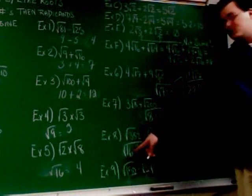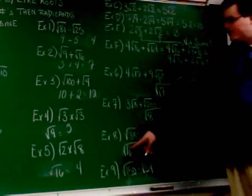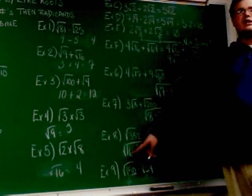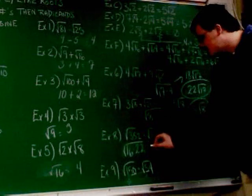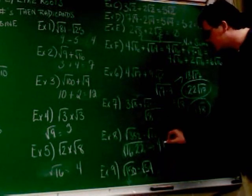You should ideally be looking for a number that's a perfect square here. That's the way it's going to work. So, root 16. What's the square root of 16? 4. So, that's the same as 4 root 22.